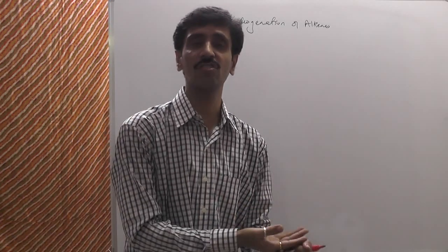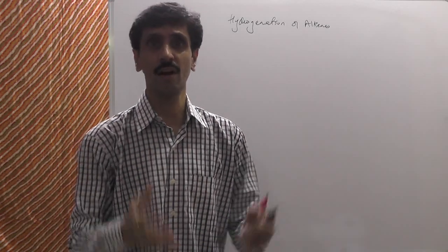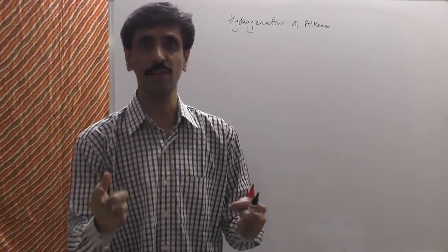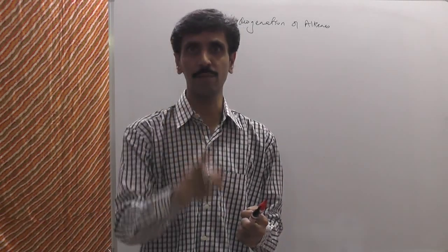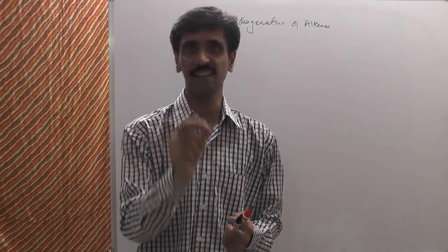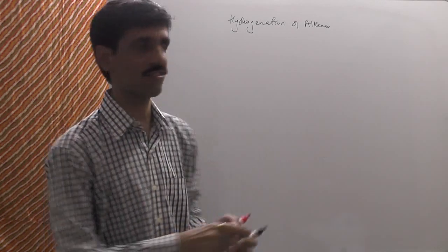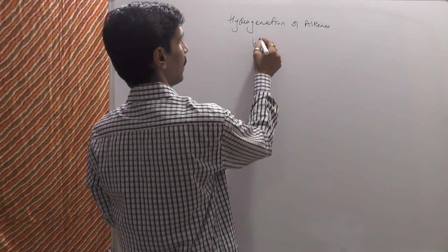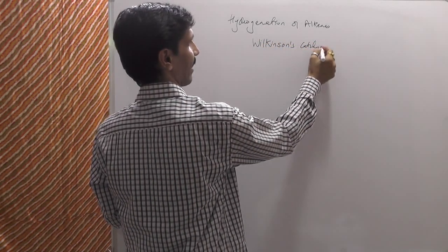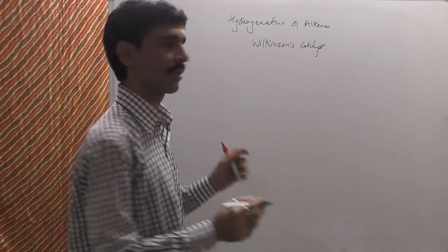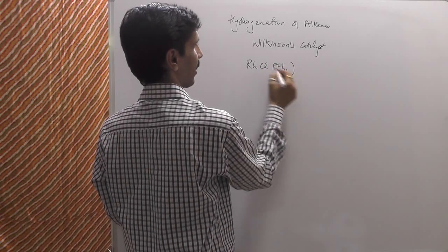This reaction basically requires high temperature and high pressure. But in an industrial process, we are always trying to find ways and means whereby the reaction can be carried out under milder conditions. With that perspective in mind, one of the best transition metal catalysts designed to carry out this reaction is called Wilkinson's catalyst. It's a transition metal complex with the formula RhCl(PPh₃)₃.